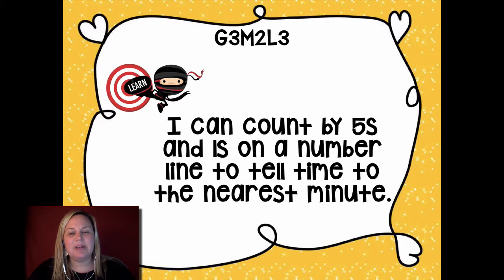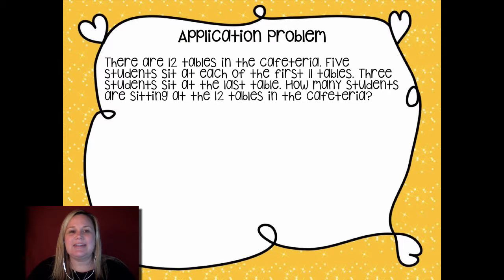Our learning goal for today says I can count by fives and ones on a number line to tell the time to the nearest minute. So let's jump in and we're going to get started with a review problem first. It's an application problem and you're actually going to talk about the same problem in relation to our concept development that comes later in the video in your debrief part of your lesson for today.